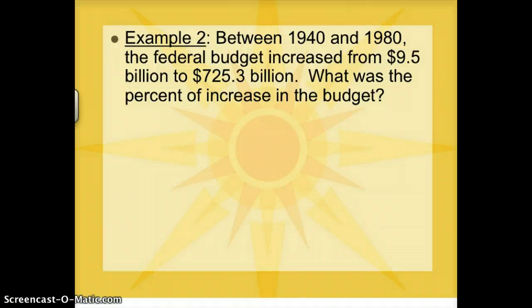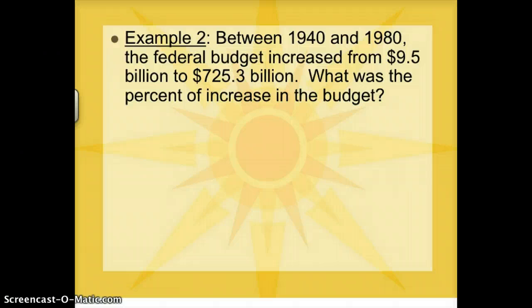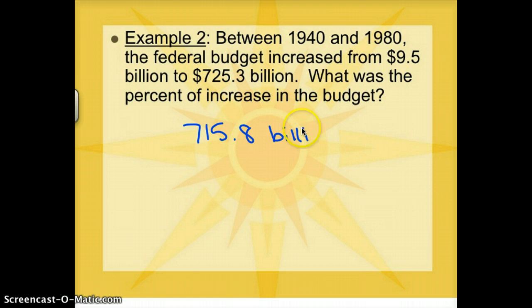Between 1940 and 1980, the federal budget increased from $9.5 billion to $725.3 billion. What was the percent of increase in the budget? We want to do our difference: $725.3 billion minus $9.5 billion gives us $715.8 billion. That's my difference divided by my original, and my original is $9.5 billion.